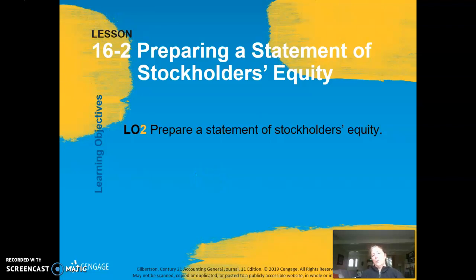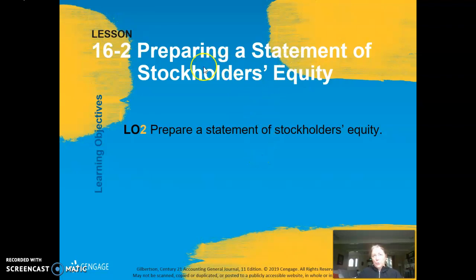We are going to continue doing Chapter 16, preparing financial statements for a corporation that is a merchandising business. In Section 16-1, we did the income statement, with the only major difference from a service business being the cost of merchandise sold section. Now we're going to do the second financial statement, which is preparing a statement of stockholders' equity — a pretty simple statement, but crucial because we need the information from it to do our balance sheet in the next section.